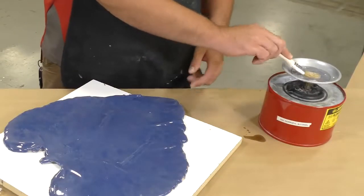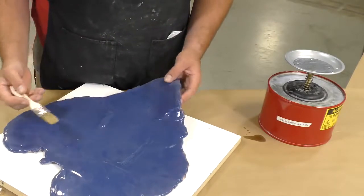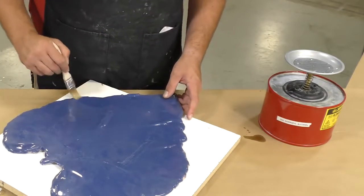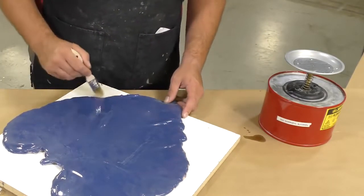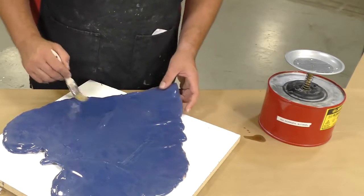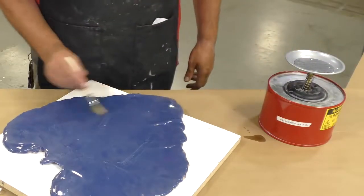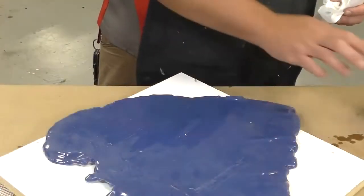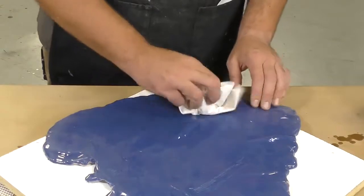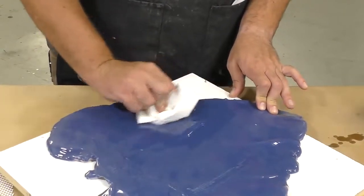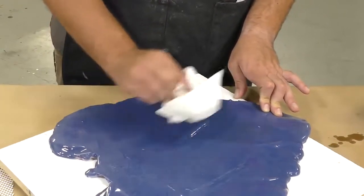The first step to fixing our mold successfully is to clean and dry the work surface thoroughly. For this we're going to use isopropyl alcohol and a clean chip brush. Now any contaminants left on the working surface could lead to potential delamination issues, so it is very important to clean and dry thoroughly.